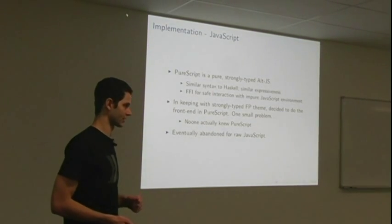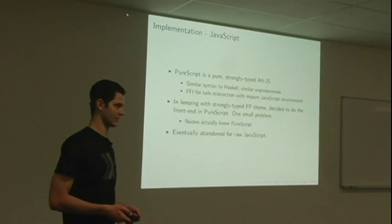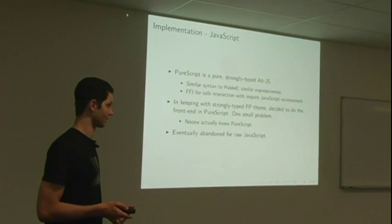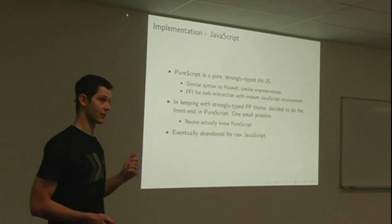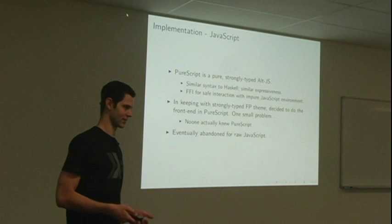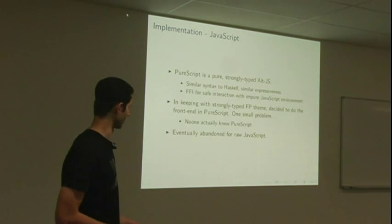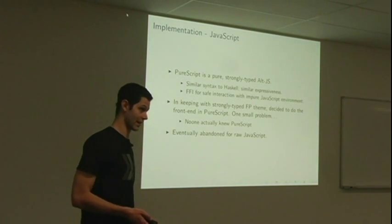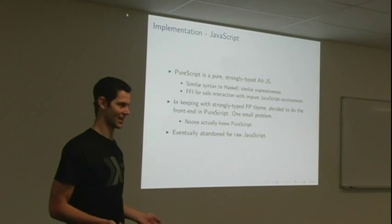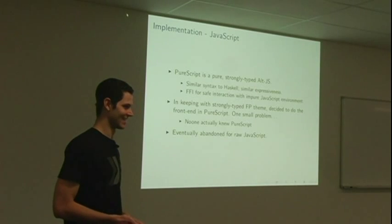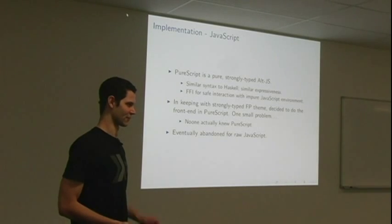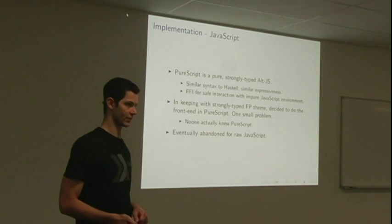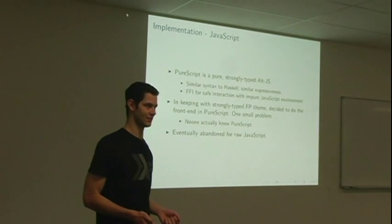For JavaScript, we originally were going to use PureScript, which is a pure, strongly typed functional programming language that compiles to JavaScript. It's got a similar syntax to Haskell and some similar expressiveness, but some of the semantics are different. There's a foreign function interface for safely interacting with the impure JavaScript execution environment that the browser or Node.js will give you. In keeping with the theme of using strongly typed functional programming, we initially set out to use PureScript for all our front-end JavaScript. The only problem was no one actually knew PureScript, and we were all trying to learn it on the go. It was just a bit conceptually dense. I think after the first day, we just threw it away and said, let's just write raw JavaScript and get it done. But since then, some of it's been converted back into PureScript, and I'm sure PureScript will make an appearance for GovHack next year.